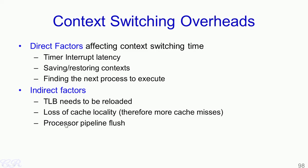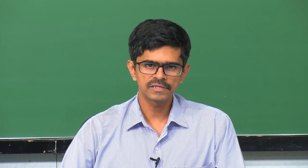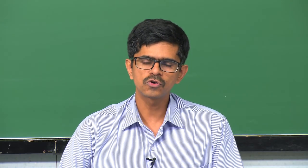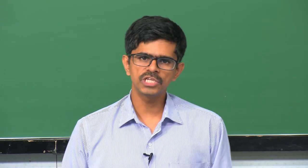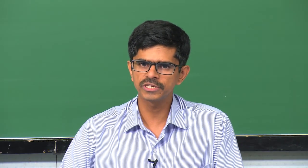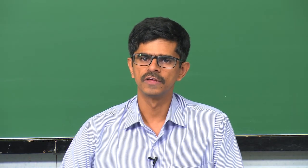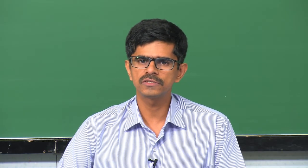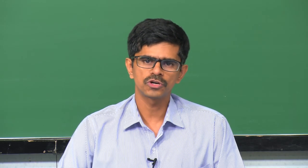Another indirect overhead is that every time an interrupt occurs the processor pipeline must be flushed. Context switching can incur significant overheads and degrade performance considerably. Designers should carefully decide how and when context switching is done to achieve best system performance. This concludes the video on CPU context switching, covering how context switching occurs in operating systems and the overheads it incurs.